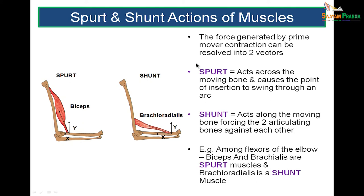Spurt and shunt actions of muscles: a spurt muscle acts across the bone, and the point of insertion swings through an arc. A shunt muscle acts along the bone and forces the two articulating surfaces together. For example, brachioradialis pulls the forearm bones towards the humerus, bringing bone against bone — this is shunt action. Biceps and brachialis are spurt muscles of the elbow joint, whereas brachioradialis is the shunt muscle.